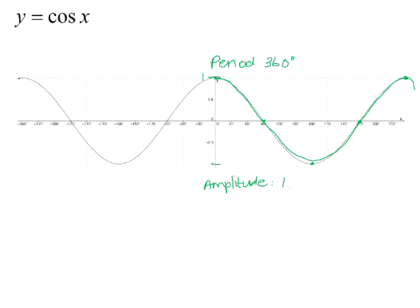On the negative side of the cos graph: the cos of negative 90 is 0, the cos of negative 180 is negative 1, the cos of negative 270 is 0, and the cos of negative 360 is 1. You can see that the cos graph is symmetrical about the y-axis, so the y values are symmetrical on either side.